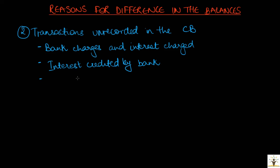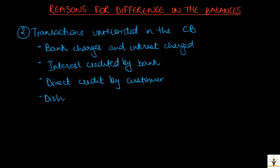There are also direct credits and deposits in the bank account — customers or debtors may deposit amounts due directly into the bank account without giving any intimation, and hence they remain unrecorded in the cashbook. Additionally, a dishonored check deposited in the bank is recorded on the debit side of the cashbook; however, the fact of dishonor is not known until the bank statement is received and hence remains unrecorded.